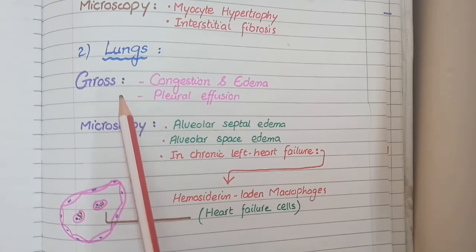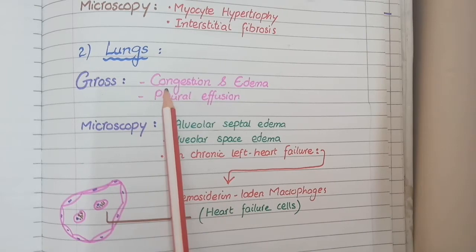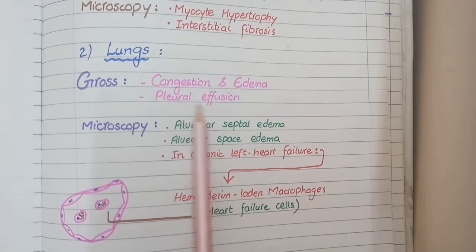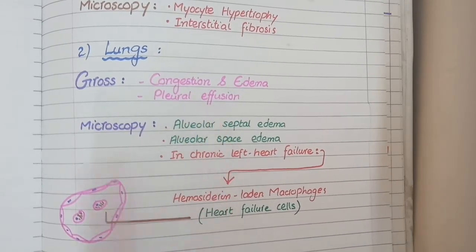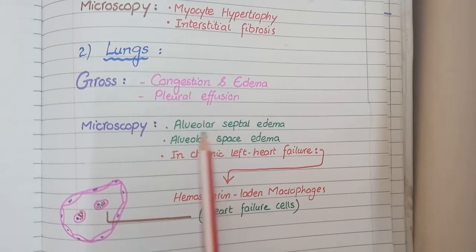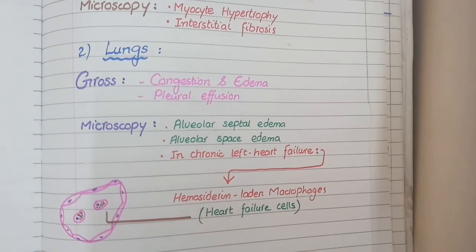Due to pulmonary congestion, some of the blood from the pulmonary circulation leaks into the alveoli and also diffuses to the pleura. So on gross specimen you see congestion of the lungs, edema, and pleural effusion. On microscopy, you see edema in the alveolar septa and alveolar spaces.